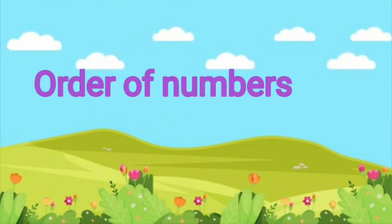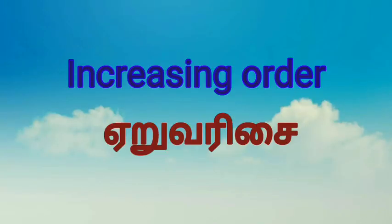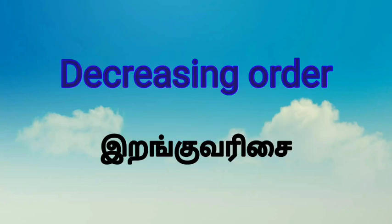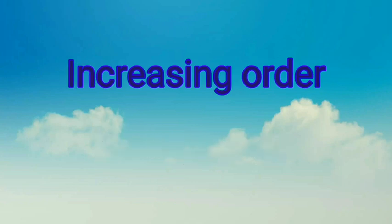Order of numbers — there are two types. First one: increasing order. The Tamil meaning is Eruvarusai. Second: decreasing order. The Tamil meaning is Irangarusai.